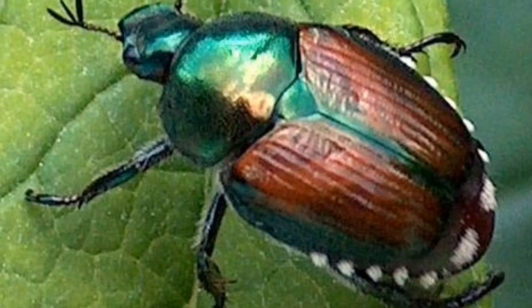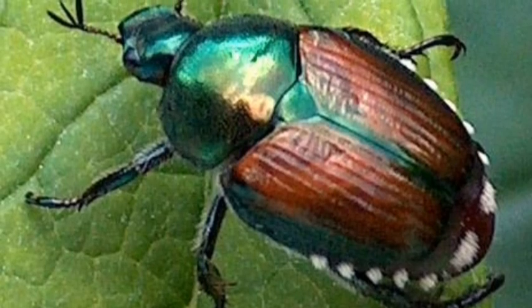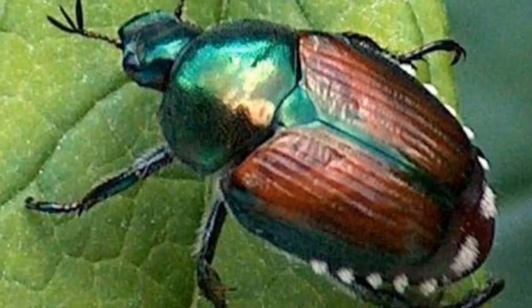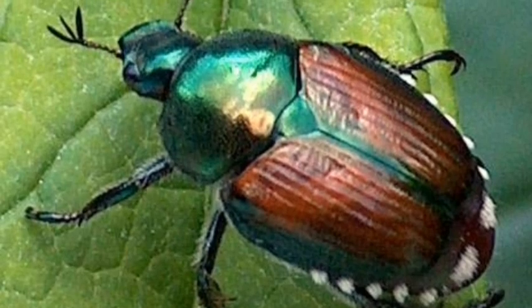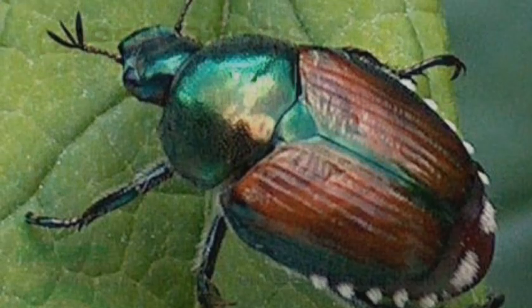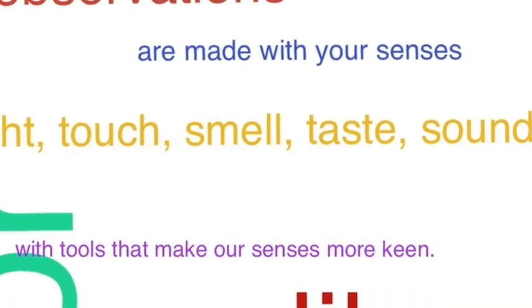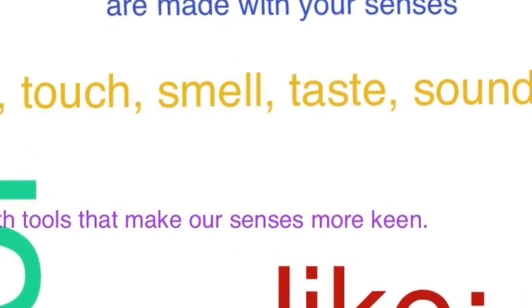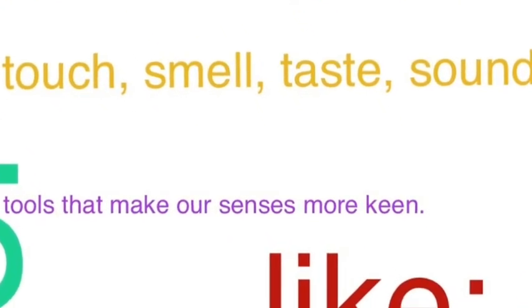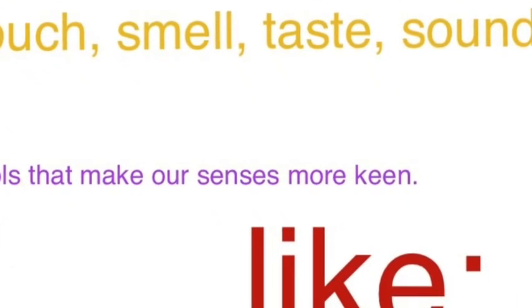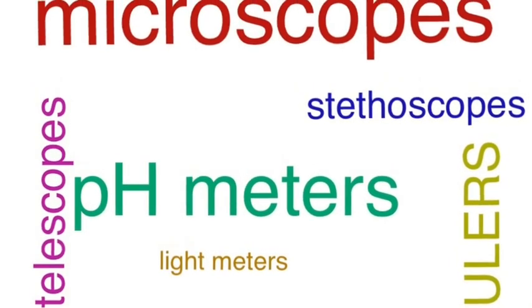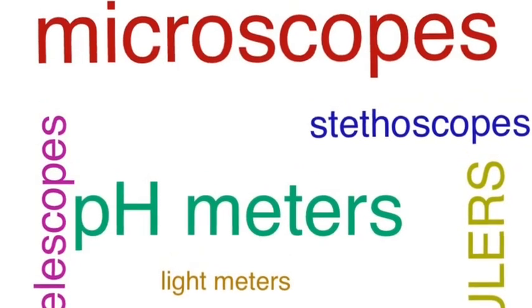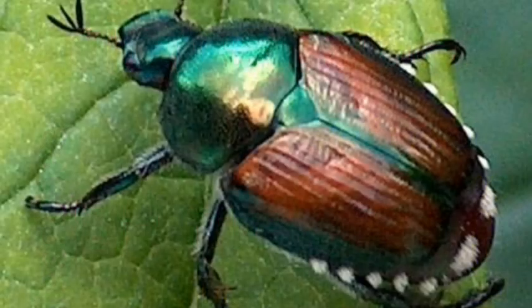Let me start by asking you, what do you see here? Do you see an insect? Do you see a shiny object? What's the difference between an inference and an observation? An observation you make with your senses — it's what we touch or smell or taste or see. Sometimes we use instruments to make our senses better, like microscopes, pH meters, rulers, or stethoscopes.